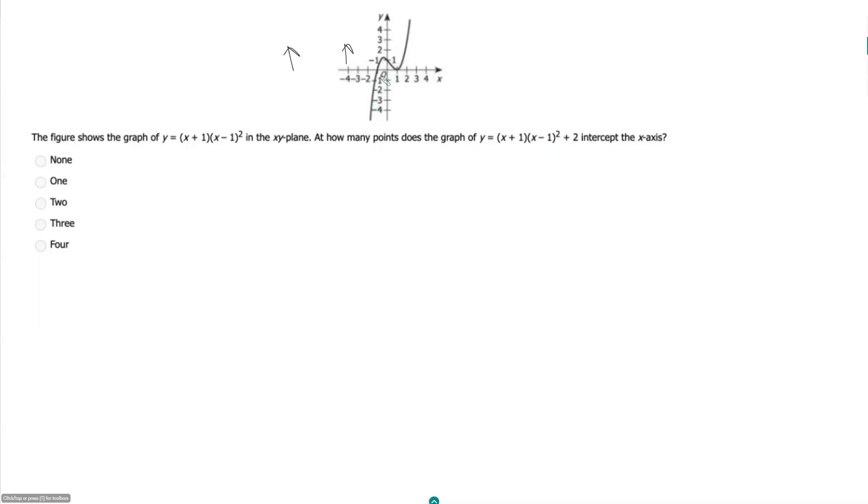Now we have two x-intercepts, and once it shifts up, well you're still going to have an x-intercept over here, but this guy here is going to move up two places. So your graph is going to look something like that, and so instead of having two x-intercepts, we now just have the one, so b.